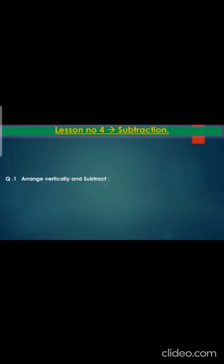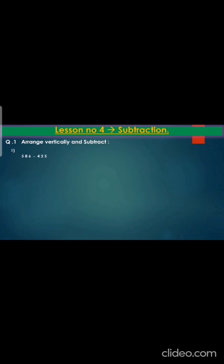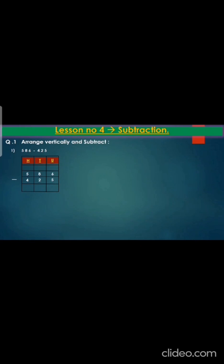On the fresh page you will write Lesson number 4 Subtraction. Then write on the first question: arrange vertically and subtract. Then write the first question: 586 minus 425. Draw the box with a pencil and write the hundreds, tens, units. Copy down the question 586 minus 425. Now let's solve the sum: 6 minus 5 is 1, 8 minus 2 is 6, 5 minus 4 is 1.